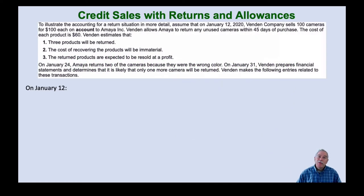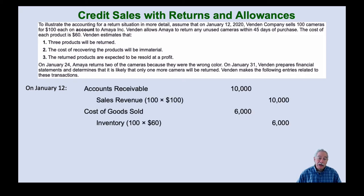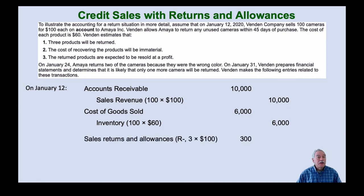On January 12th, when we record the sale, we do the same entries as before: debit accounts receivable, credit sales, debit cost of goods sold, and credit inventory for the selling price and cost of 100 cameras. On that same day, however, because we estimate three cameras will be returned, we immediately record an estimated allowance — a contra revenue reduction of $300.